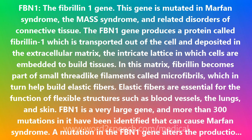Fibrillinopathies type 1 are caused by defects in the fibrillin-1 protein, which is produced by the FBN1 gene. While Marfan syndrome is the most common type of fibrillinopathy, not all mutations in the FBN1 gene cause this syndrome. FBN1 mutations cause a spectrum of connective tissue disorders with a broad range in severity and age of onset. Some FBN1 mutations cause a severe disorder that is fatal to newborns, while other mutations cause adult-onset fibrillinopathies with a single abnormality, such as a dislocated lens in the eye or an abnormal aorta. The FBN1 gene is located on the long arm of chromosome 15 in band 15q21.1.